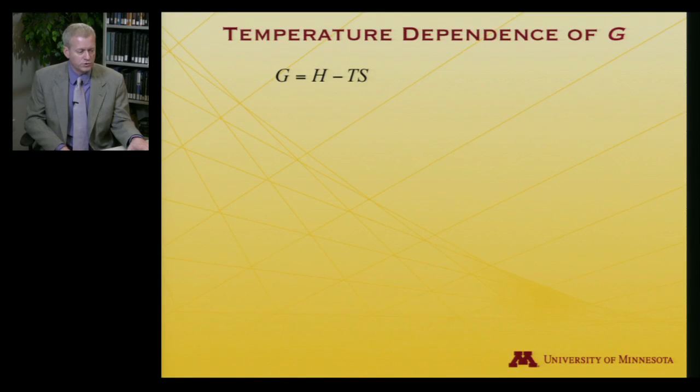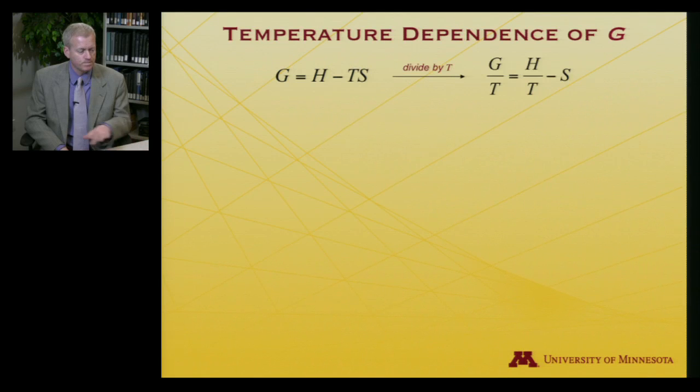Now that we've seen the particularly simple dependence of the free energy on pressure for a gas, let's take a look at the temperature dependence of the free energy. So we start from G equals H minus TS. And now I'd like to divide both sides by T. So G over T is equal to H over T minus S.